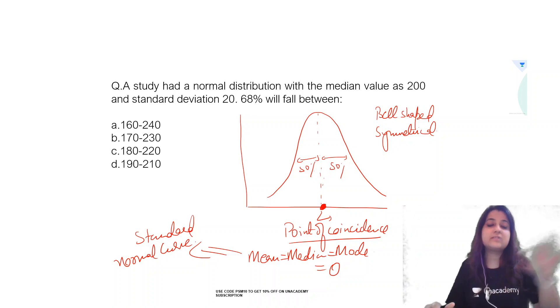At the point of coincidence, mean, median, mode can be anything. It can be equal to 15, 20, 25, but when it's equal to 0, it's known as a standard normal curve.